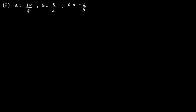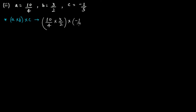In the second example, let's first solve for (a × b) × c, where a = 10/4, b = 3/2, and c = -1/5. So (10/4 × 3/2) × (-1/5): 10 × 3 = 30 and 4 × 2 = 8, giving 30/8. Then 30 × (-1) = -30, and 8 × 5 = 40. So (a × b) × c = -30/40.